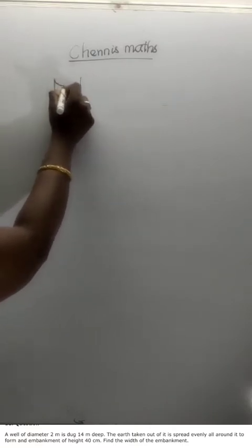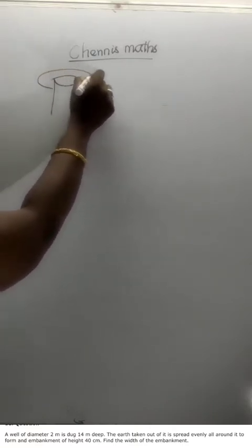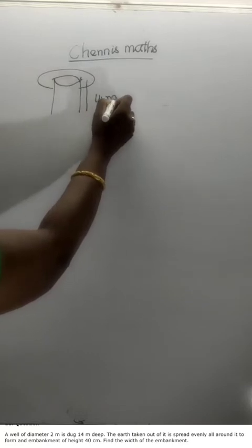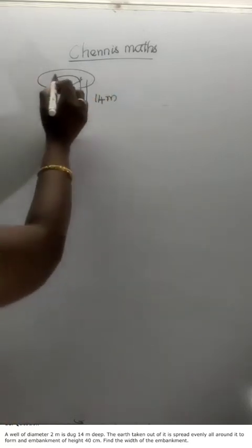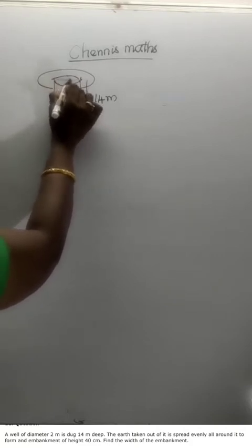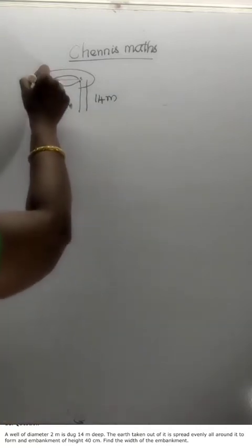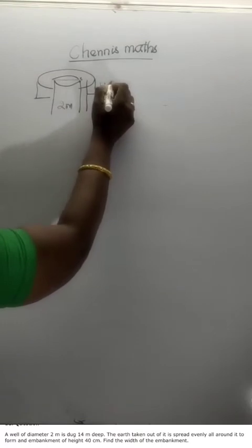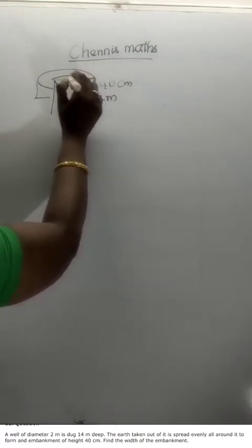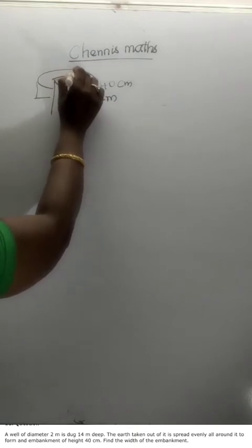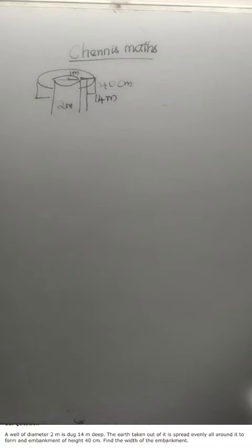If there is a well, the well diameter is 2 meters. An embankment is built around it of height 40 centimeters. The width is what we need to find. The diameter is 2 meters, so the radius is 1 meter.